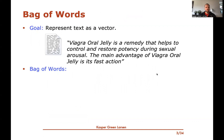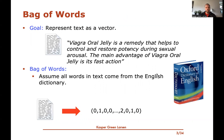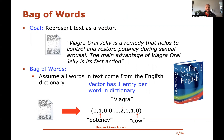In the bag of words video, we saw the bag of words representation of a text document, where we assume all the words in the text come from the English dictionary, and we represent the document as a vector with one entry per word in the dictionary. Each entry stores a count of how many times that word occurs in the document. For example, 'potency' occurs once, 'Viagra' occurs twice, 'cow' occurs zero times.